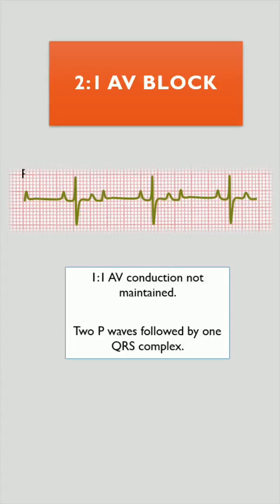In this ECG, 1-to-1 AV relationship is not maintained. We can see that 2 P waves are followed by one QRS complex. This type of pattern is known as 2-to-1 AV block.